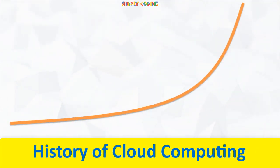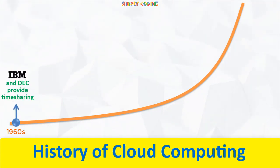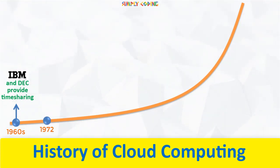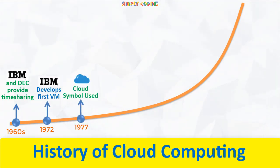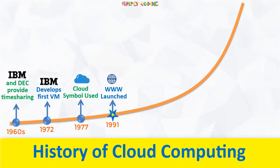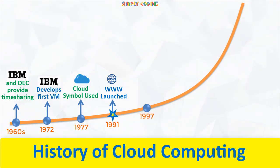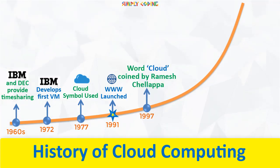If you look back at history, in the 1960s, when computers were very expensive, IBM and DEC used to provide their computers for timesharing. You could submit jobs to be run on IBM mainframes. In 1972, IBM developed the first virtual machine. The cloud symbol was used way back in 1977. Once the internet and the World Wide Web came into the picture, many telecommunication companies offered VPN or virtual private networks. And Compaq started offering online disk space where you could keep files.